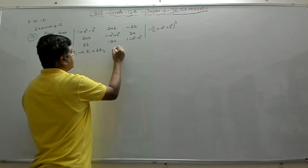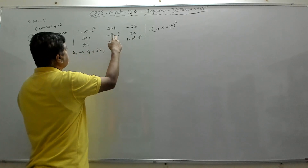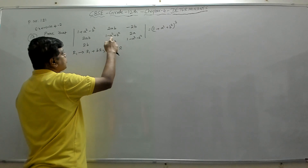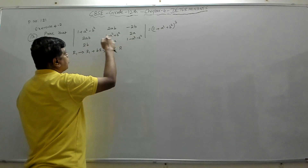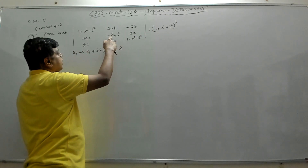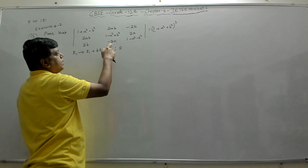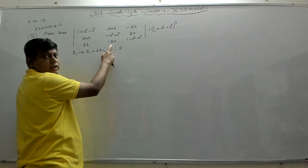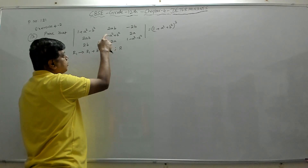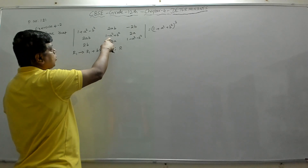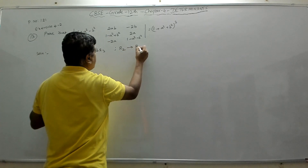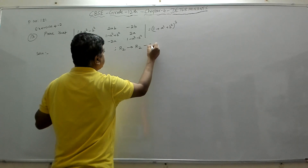Similarly, looking at row 2, which has 1 - a² + b², if we multiply -2a by -a, we get +2a², and 2a² - a² = +a², so that term becomes 1 + a² + b² as well. So for row 2, we apply the operation r2 → r2 - a·r3.